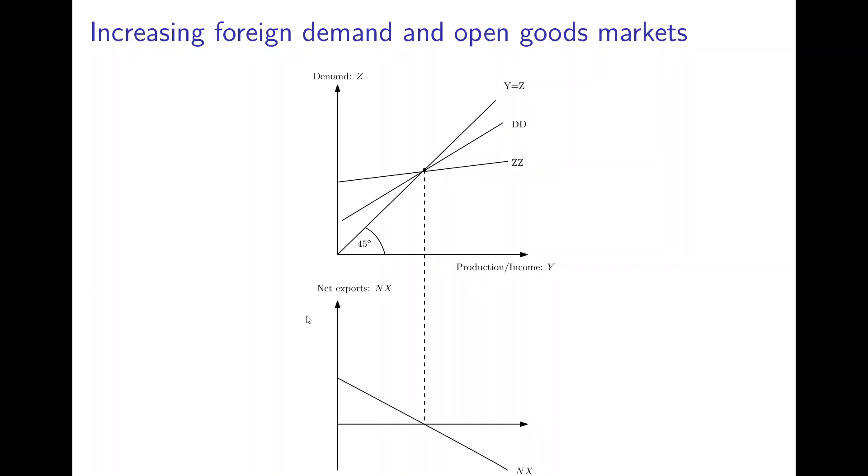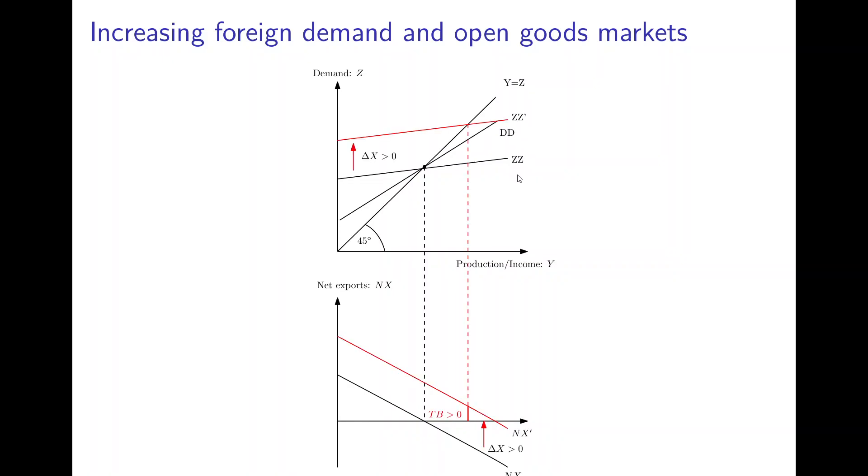Now there is this expansionary fiscal policy abroad, and this expansionary fiscal policy abroad shifts the ZZ curve because Y star increases, and that shifts exports upwards. So there will be more demand for exports and this will shift the ZZ curve upwards to ZZ prime. The DD curve is not affected by this shift.